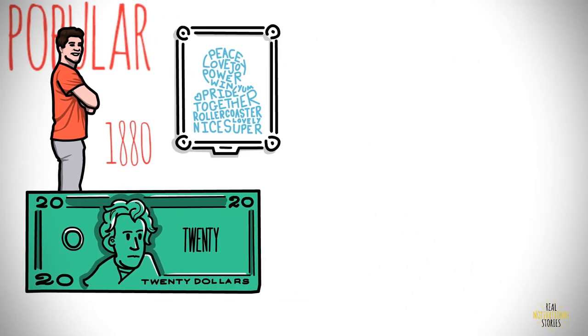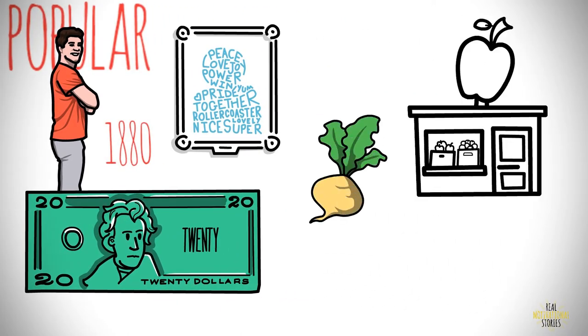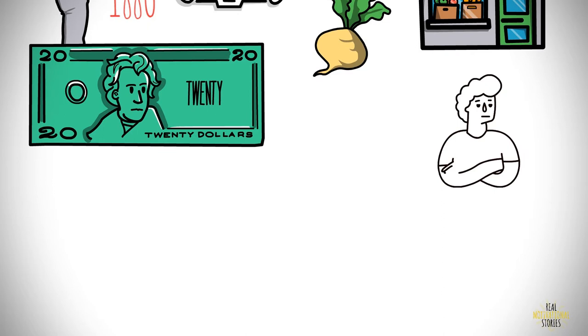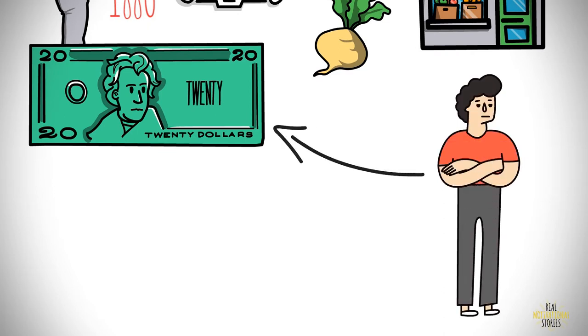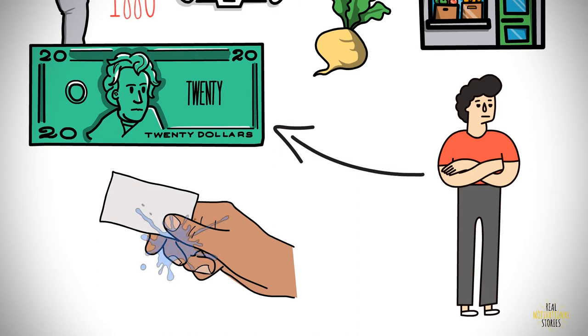One day, he was buying turnips at the local grocery store. He gave the cashier a $20 note. The cashier noticed that he got some ink on his fingers while taking the note from Emanuel. But he did not pay much attention and took the money.